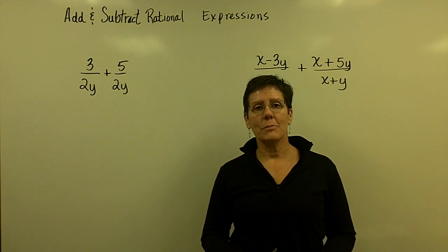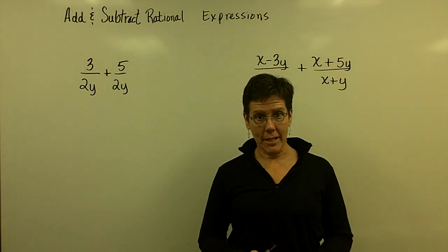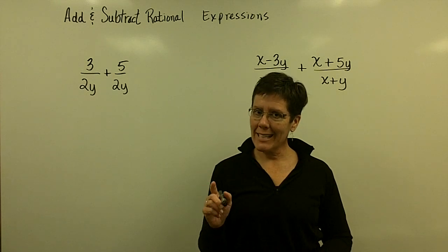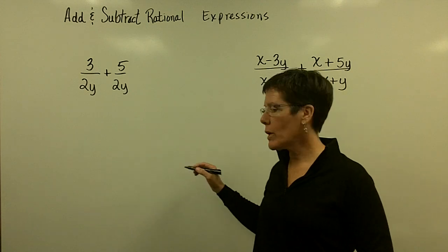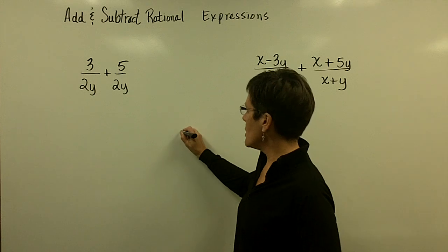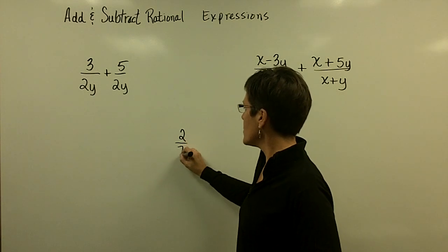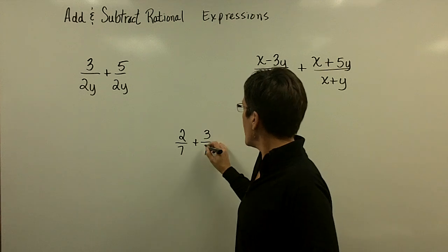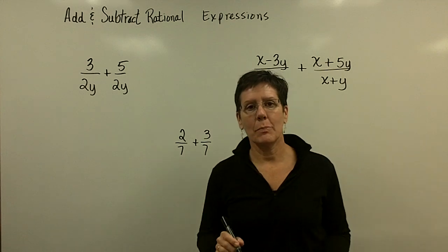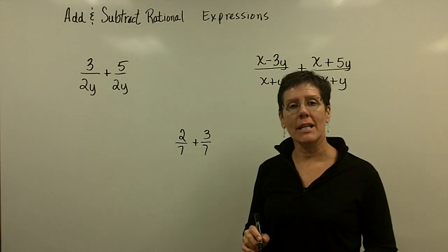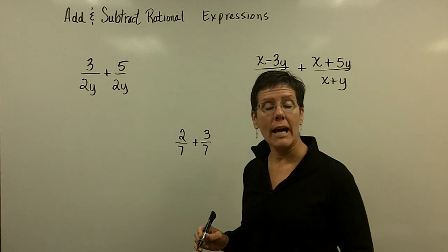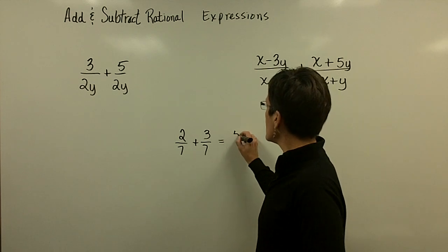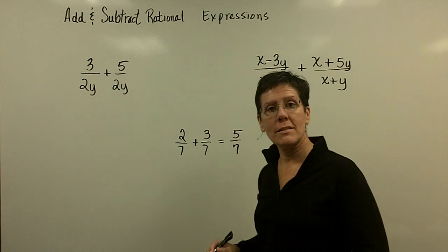Let's now add and subtract rational expressions. Remember, a rational expression is a fraction. So let's add and subtract fractions. If you were going to add 2/7ths and 3/7ths together, they are ready to be added because they have a common denominator. And when they do, you're allowed to add their numerators. So 2 plus 3 in this case is 5 over that common denominator.